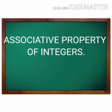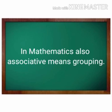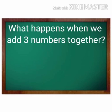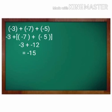Associative property of integers. What is associative property? Association is to come under one group. In mathematics also, associative means grouping. Let us see what happens when we add three numbers together. Let these three integers be minus 3, minus 7, and minus 5. Look at minus 3 plus minus 7 plus minus 5. Let us group minus 7 and minus 5. That gives us minus 3 plus (minus 7 plus minus 5), which gives us minus 3 plus minus 12, which is equal to minus 15.